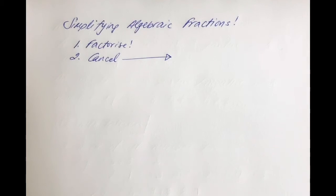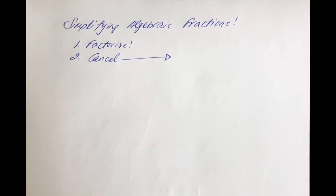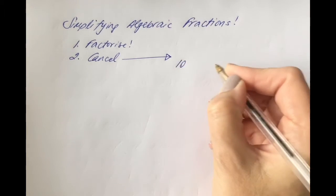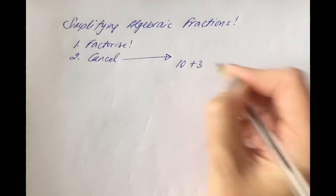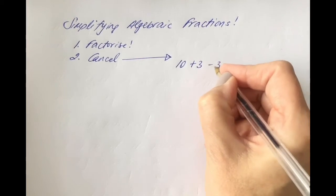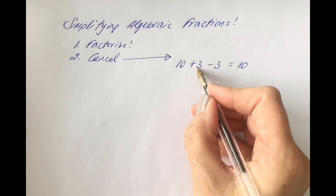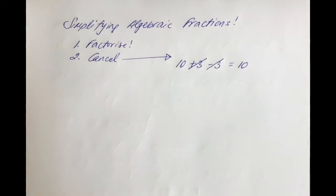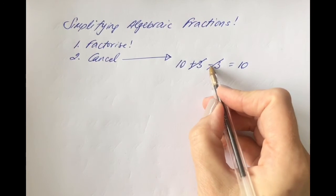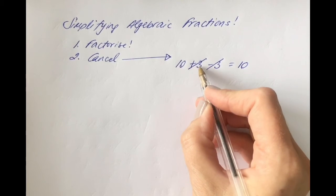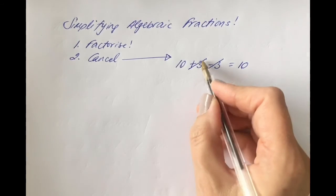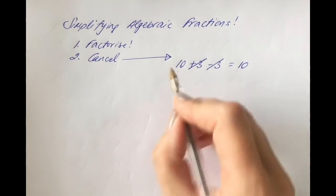Often pupils are unsure about when you can cancel and when you can't cancel. Let's strip it back to a simple example. If you start with 10, add 3 to get 13, then subtract 3, you end up back at 10. Adding 3 and then subtracting 3 cancels itself out because subtraction cancels out addition.